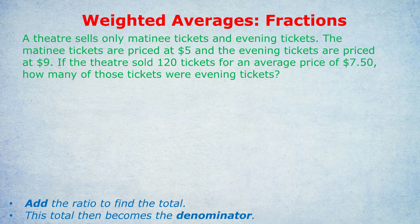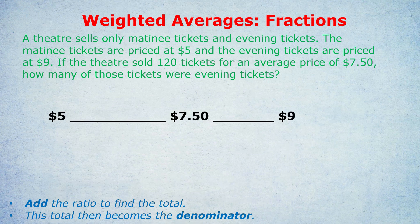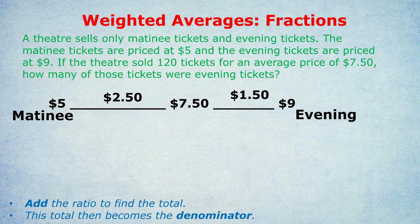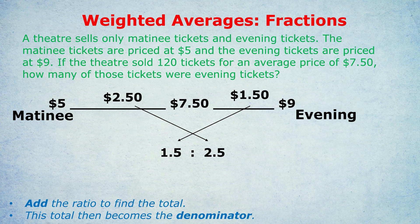A theatre sells only matinee tickets and evening tickets. The matinee tickets are priced at $5 and the evening tickets are priced at $9. If the theatre sold 120 tickets for an average price of $7.50, how many of those tickets were evening tickets? We have matinee at $5, evening at $9, and an average price of $7.50 in the middle. So we set up our number line. As before, we find the distance on the left and the distance on the right: 1.5 on the right is the distance between $7.50 and $9, and 2.5 is the distance on the left. We flip those distances, so the 1.5 goes to the left and the 2.5 goes to the right.